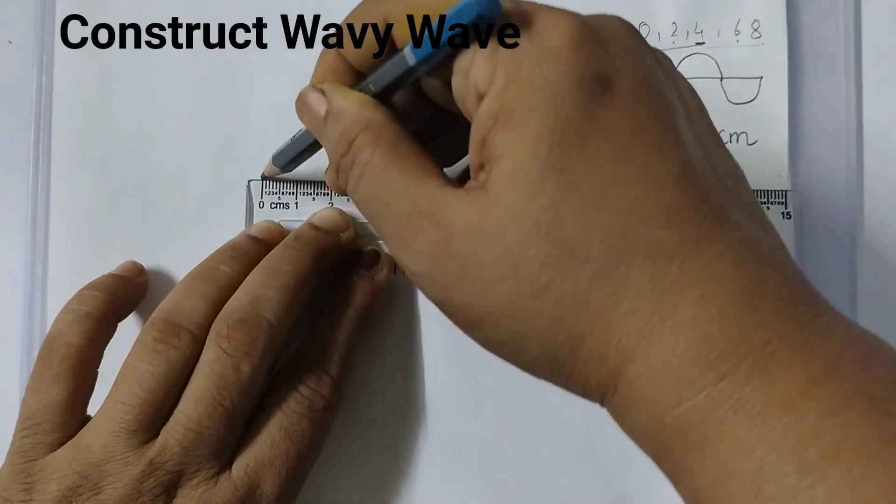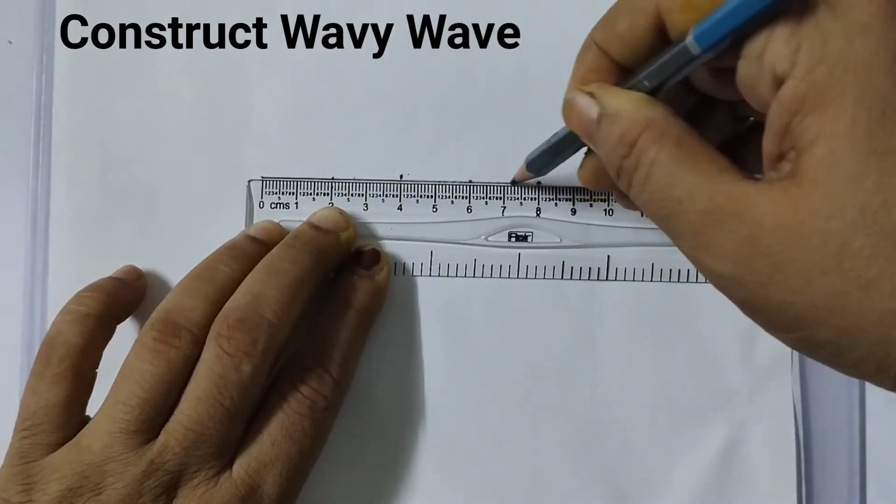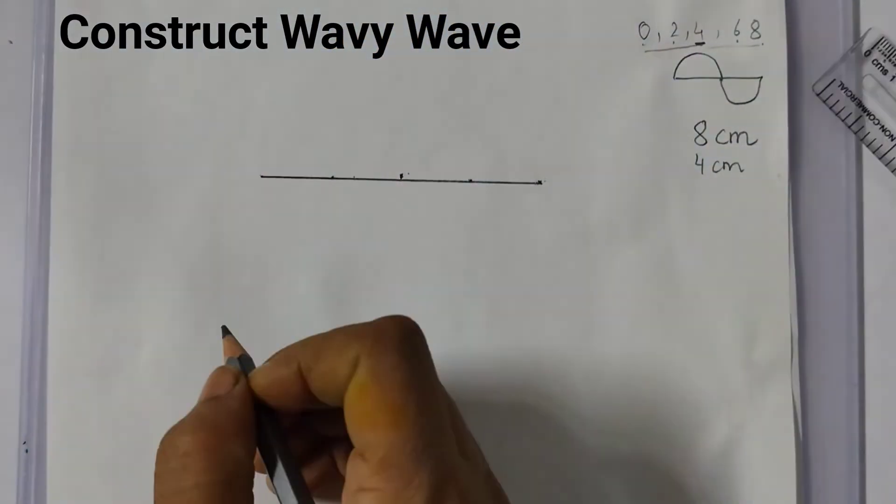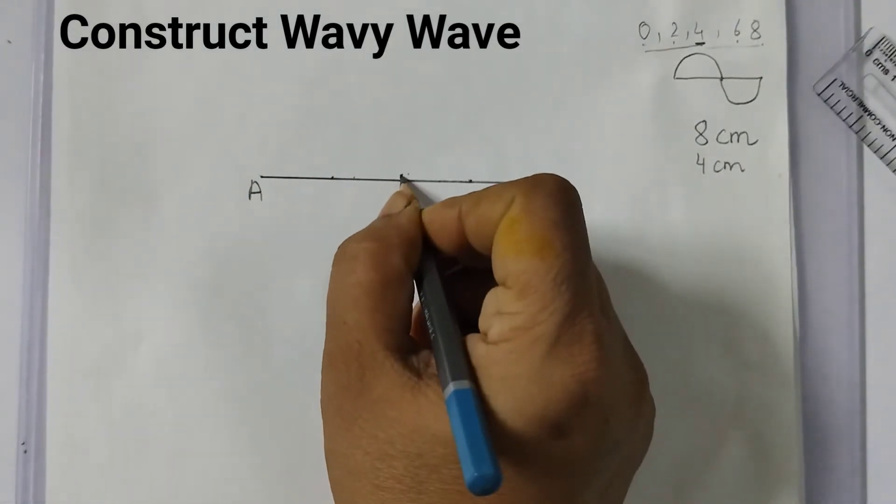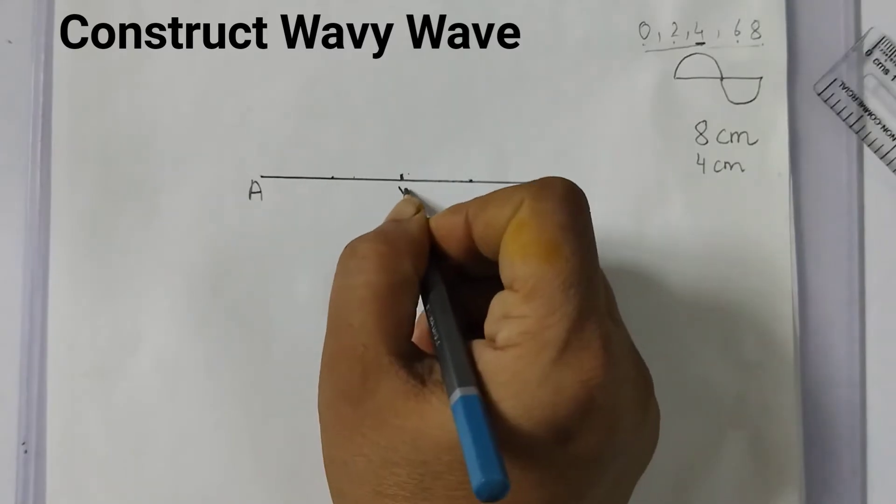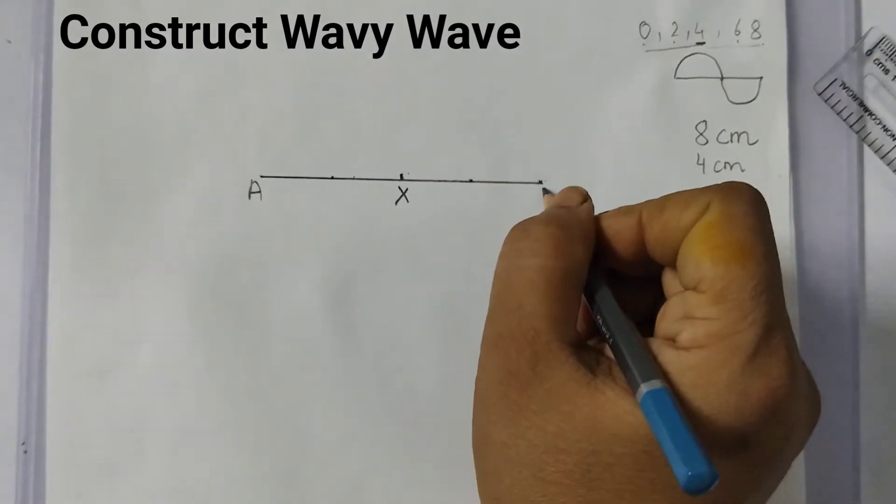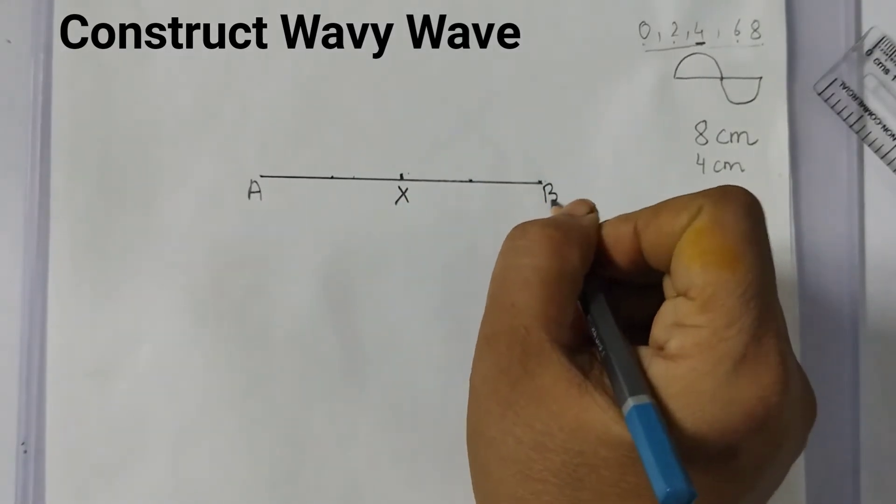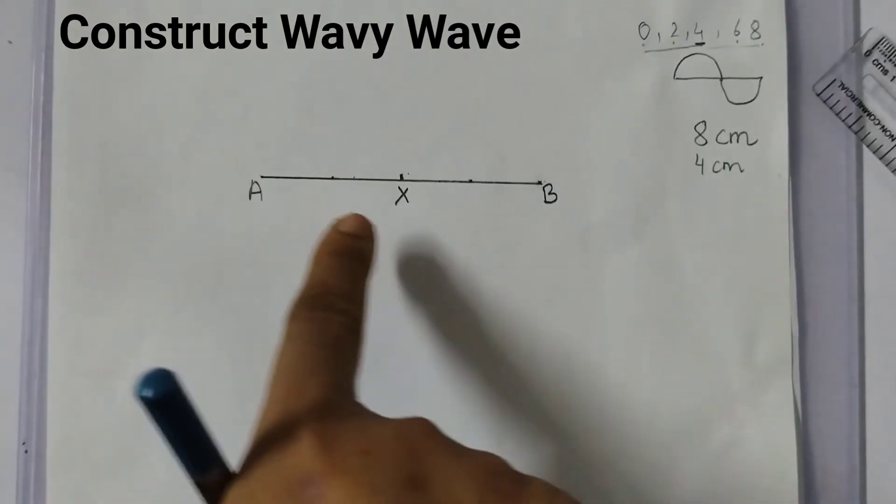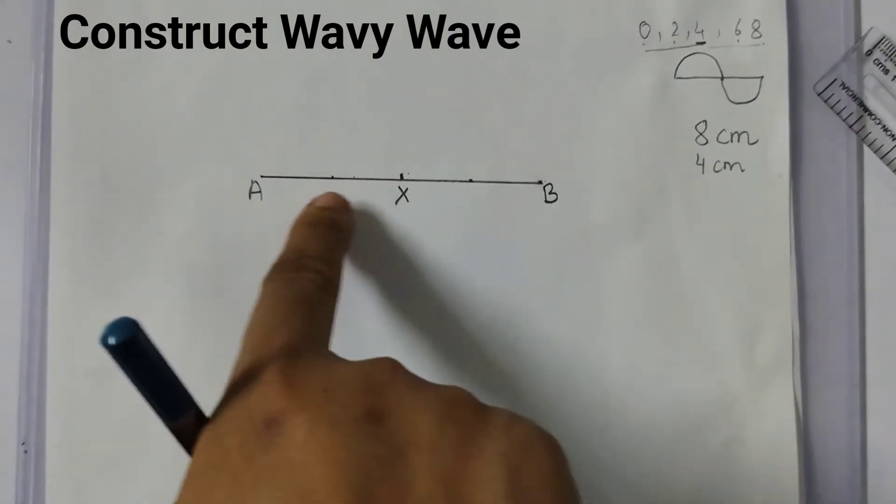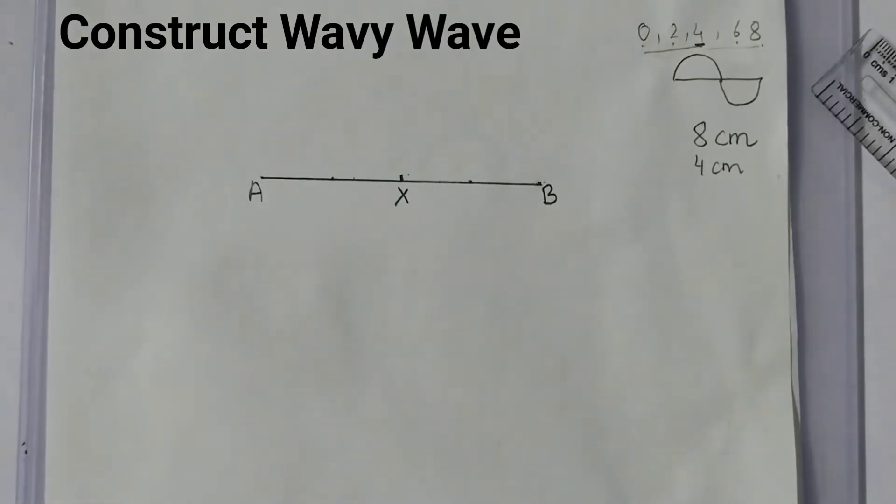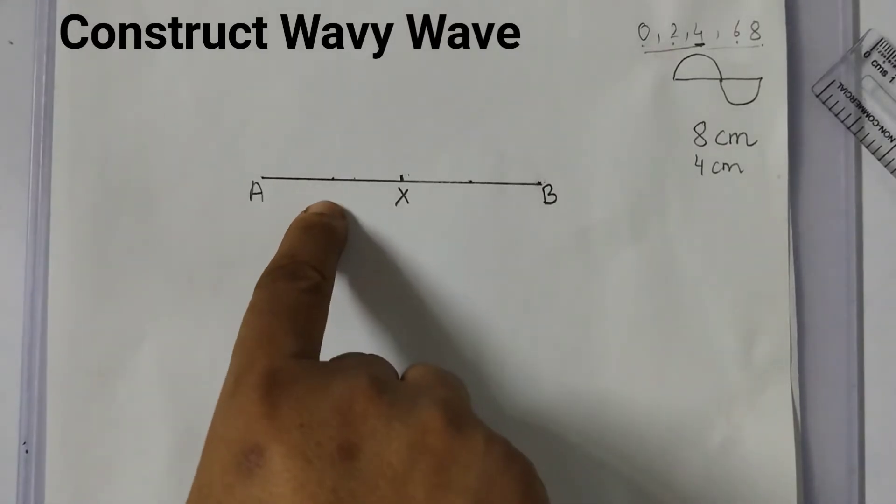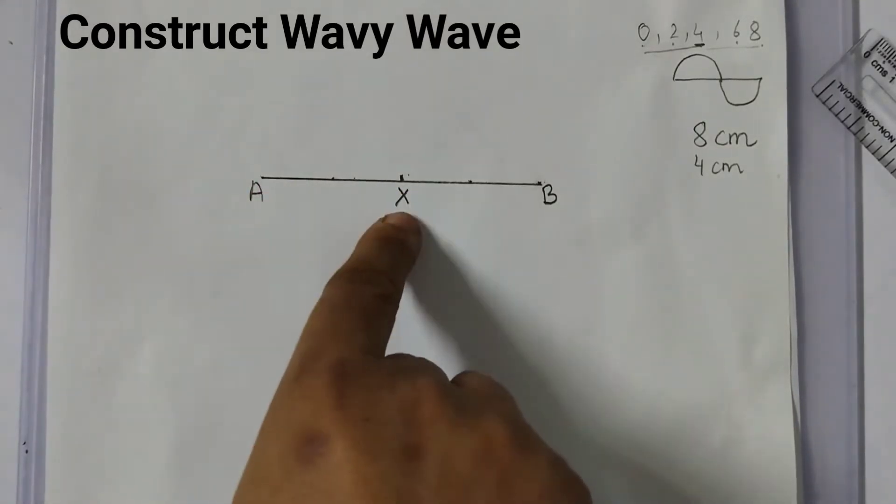So I will join the points, all these points. I will label this as A, midpoint here is X, and the end point is B. So A, X, B. Now see here I have marked two more points here. How is this going to help? It's going to help to draw the waves because this is the midpoint of A, X.